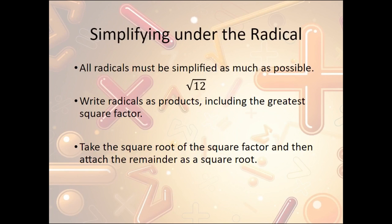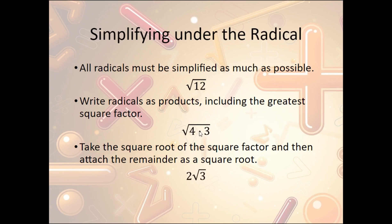A reminder: you need to simplify under the radical all the time. Let's say you end up with the square root of 12. You always need to simplify it as much as possible by finding the greatest square factor. For 12, the factors are 1, 2, 3, 4, 6, and 12. The perfect squares are 1 and 4, but we want the biggest one — so 4. That's 4 times 3. The square root of 4 is 2, so we leave the 3 under the square root. This becomes 2 square root of 3.